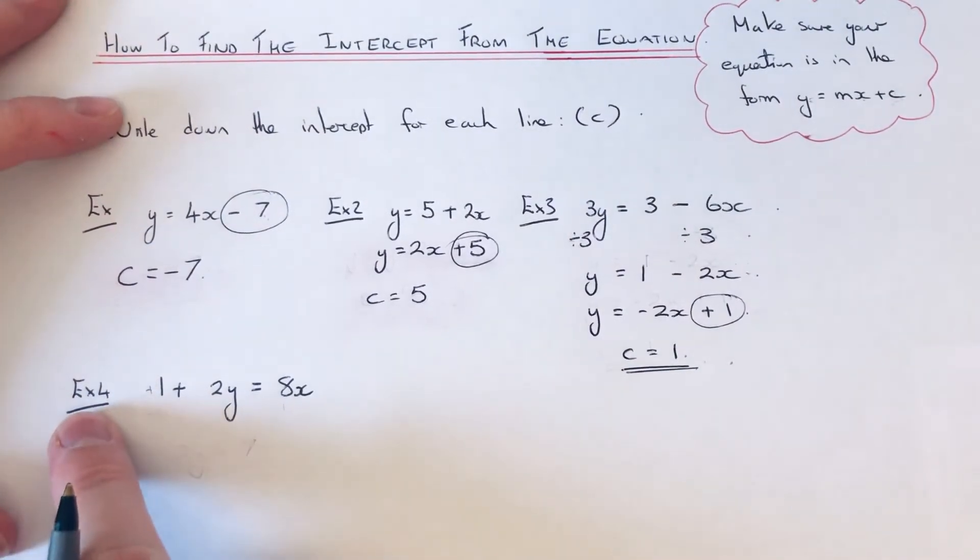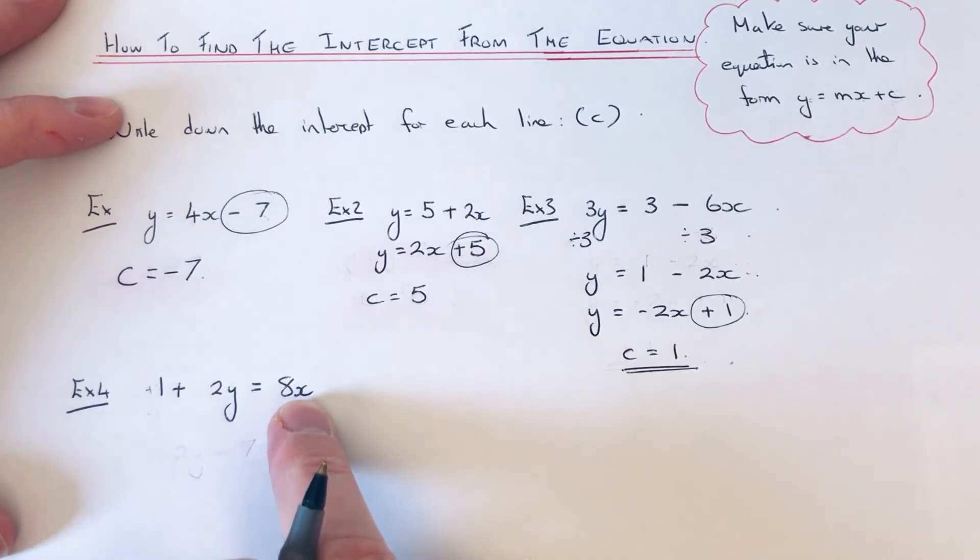Let's have a look at our final example. This one's the hardest. We've got 1 plus 2y equals 8x. So we need to make y the subject.